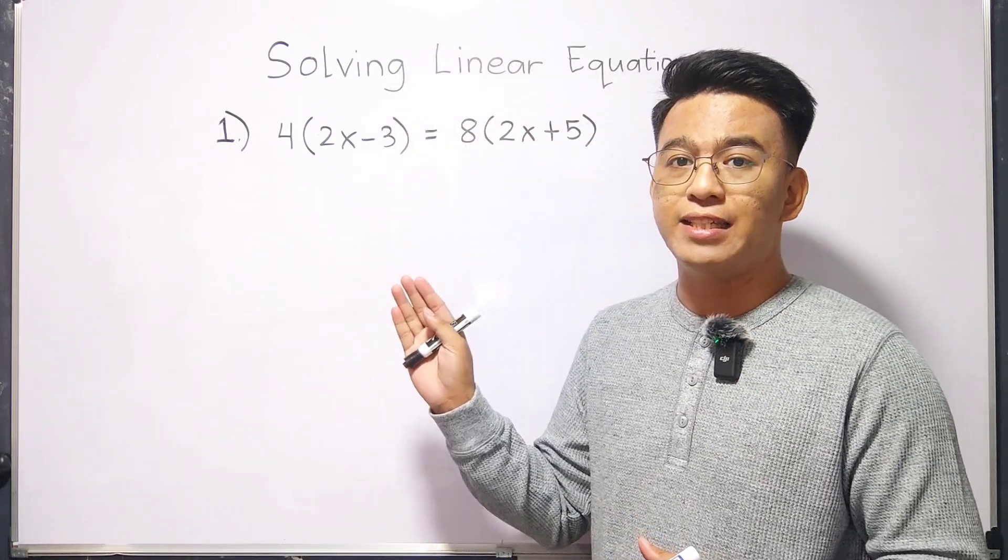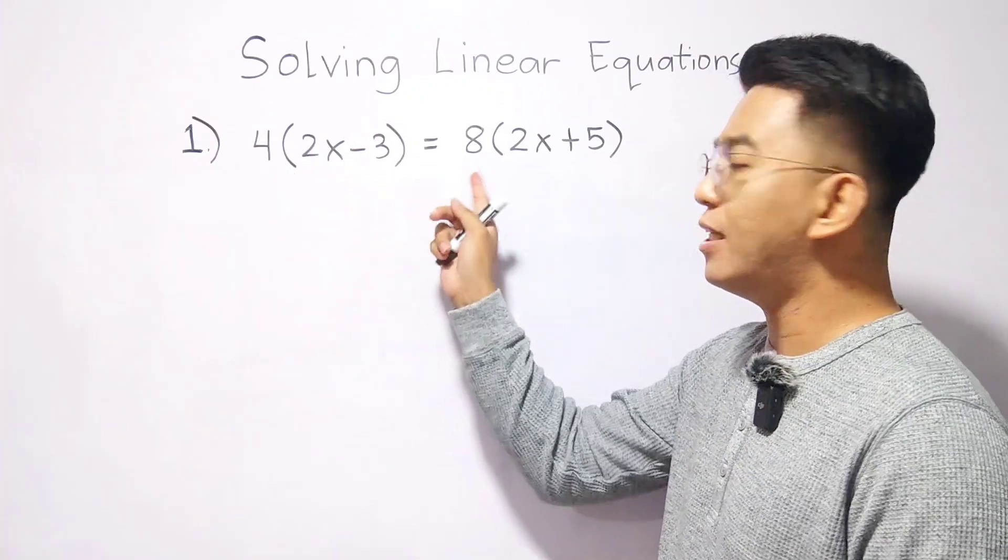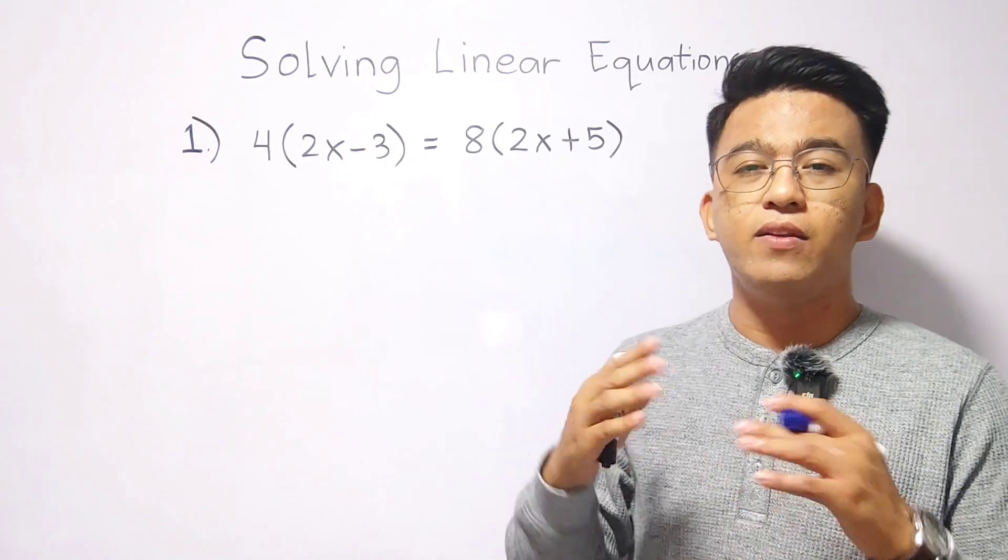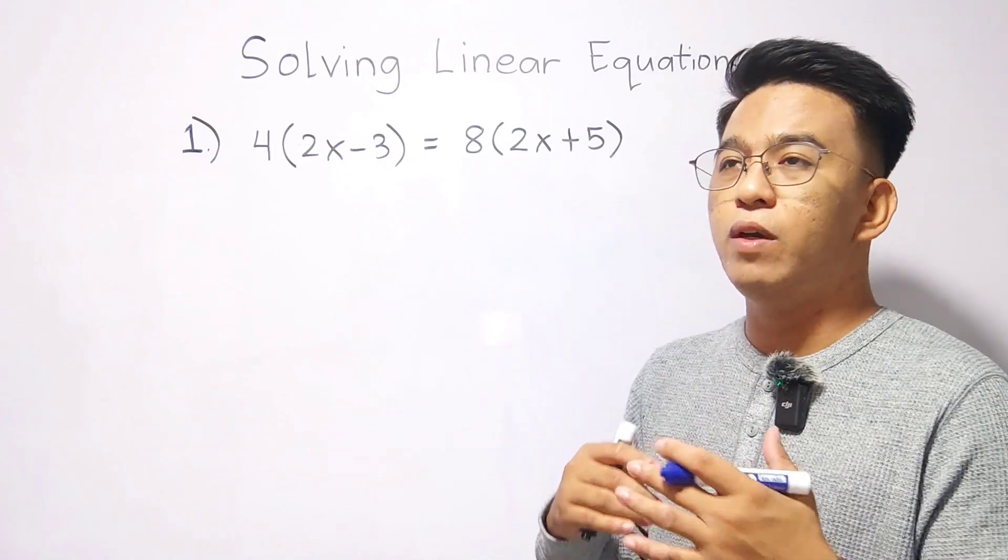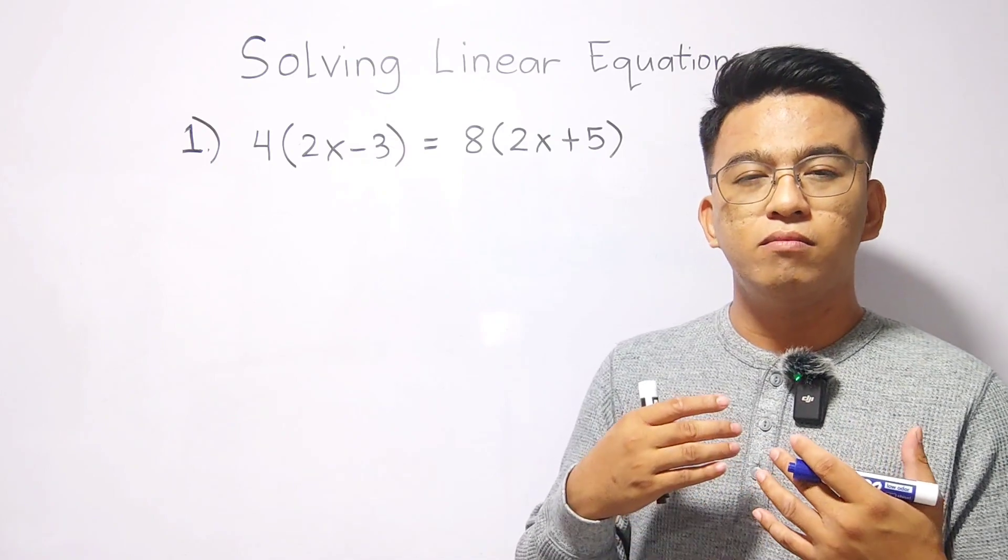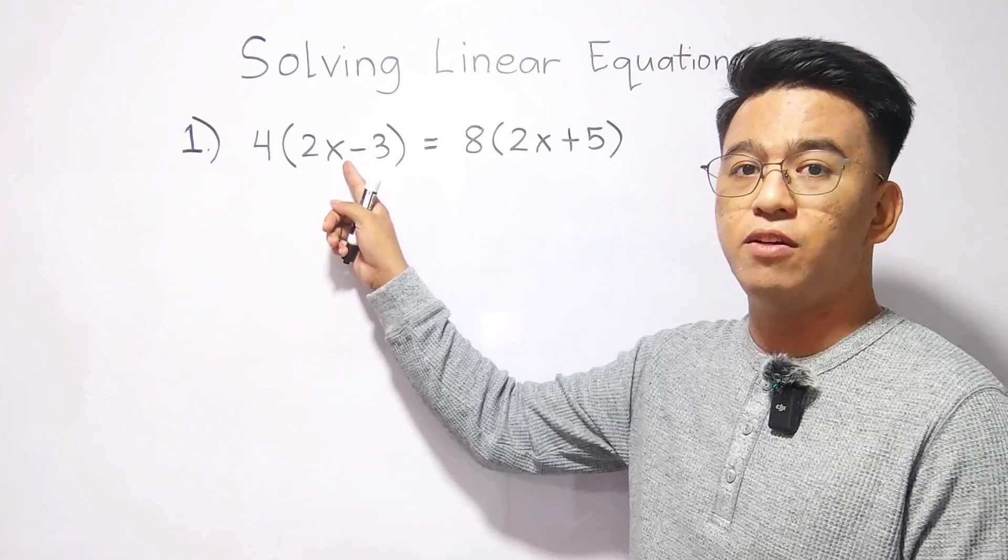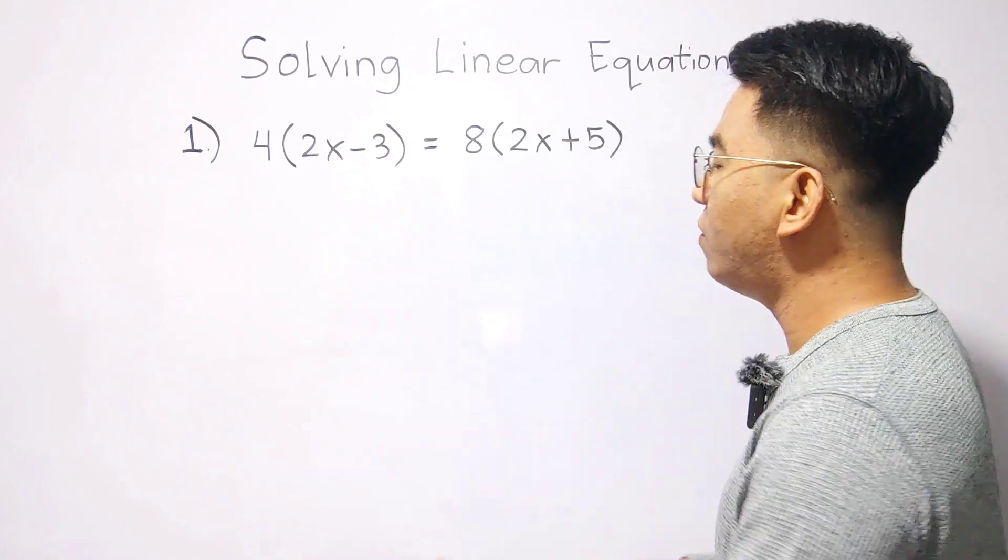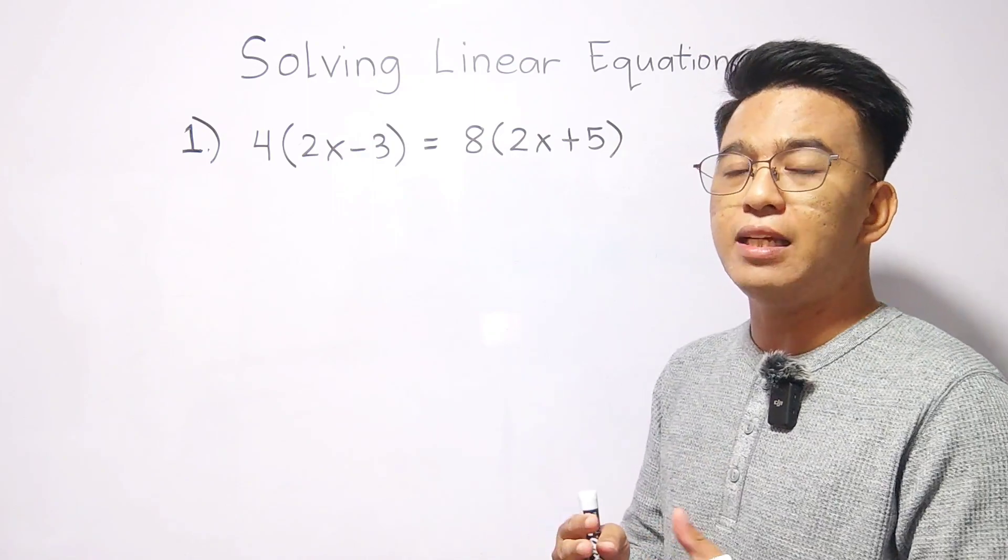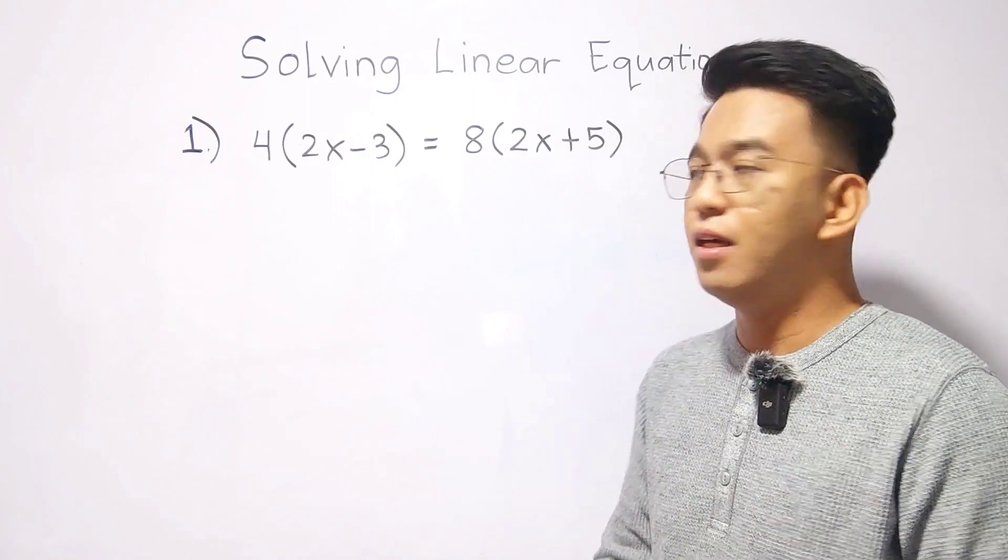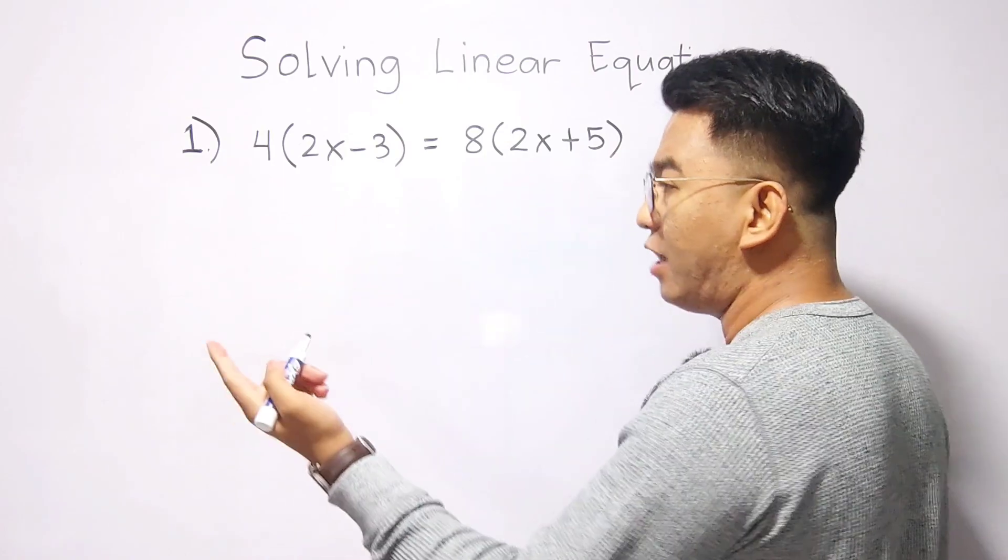So what we have here is the first example. We have 4 times 2x minus 3 is equal to 8 times 2x plus 5. Now this time, we have a bigger equation wherein we will perform 2 or more steps for us to find the value of x. So in this part, as you can see, we have parentheses. What I mean is that we need to multiply. Same with this one. So let's try multiplying this one and find the value of x.